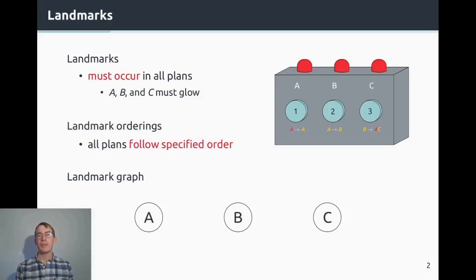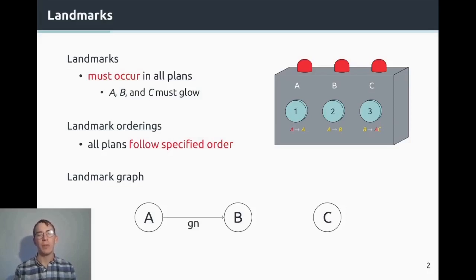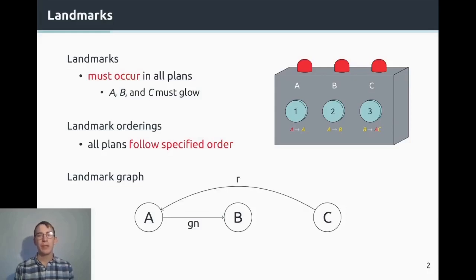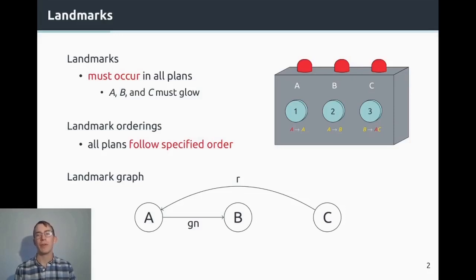Landmark orderings specify the order in which we can or should achieve these landmarks. For example, the second button tells us we need to turn on A before we can turn on B, because A is a greedy necessary precondition for B. There are other ordering types, such as reasonable orderings. This one can be justified by the third button: whenever we turn on C we also turn off A, so it would be reasonable to only turn on A after turning on C. We have seen though that this is not possible in this example, but the reasonable ordering is still correct.